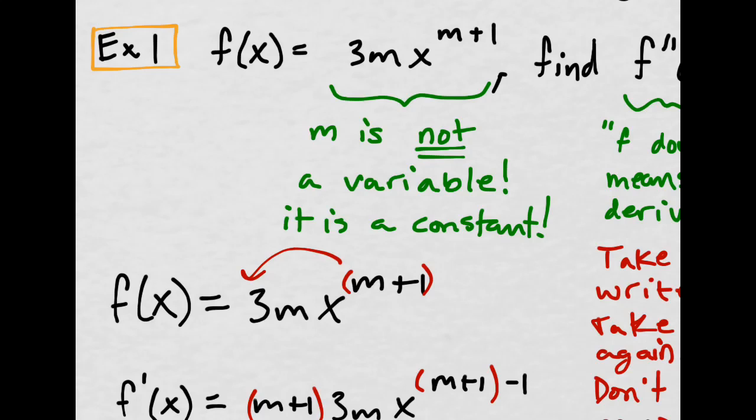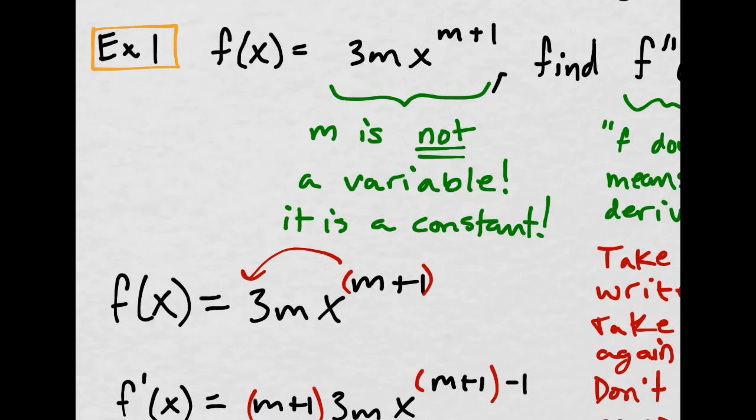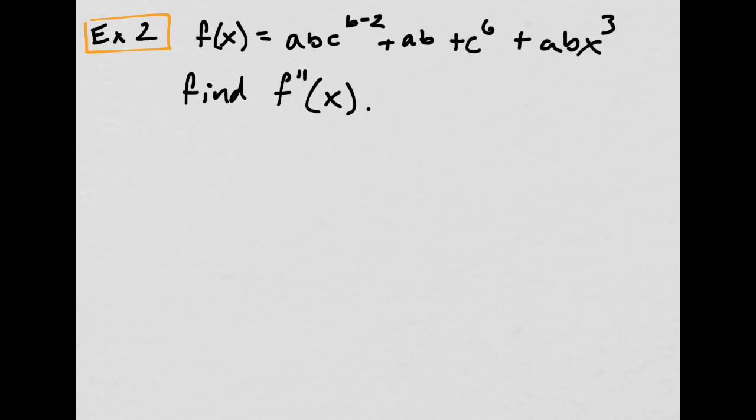That's example 1. We do another example. Wait, before I move on, some people say to me, how you know m is not a variable? Well, we have a function of x. x is the thing that we're plugging in, so x is the only variable. That's how you know.